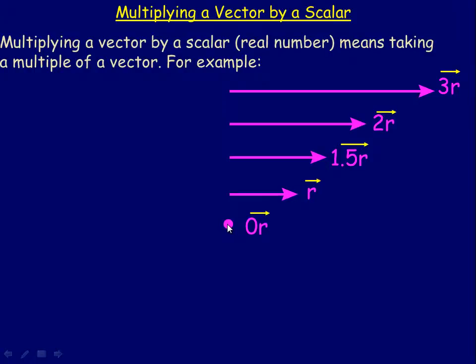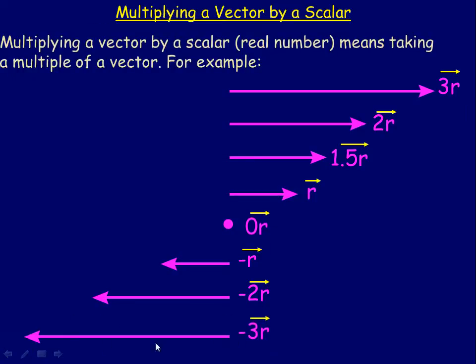If we multiply the vector r by the scalar 0, we get the zero vector, which is the only vector that has no specific direction. Negative r would be the same length as r but in the opposite direction, hence the negative 1. Negative 2r is twice as long as r and in the opposite direction. And negative 3r would look like this.